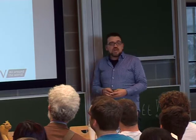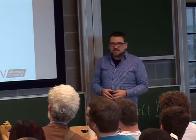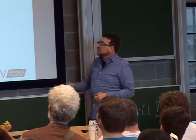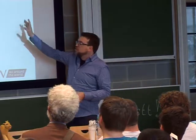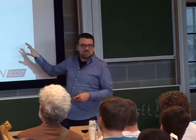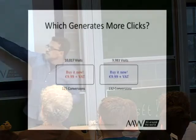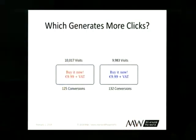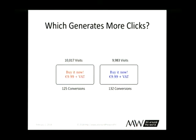Let's try this again. We have roughly 20,000 visitors in our experiment — a little over 10,000 on the red button, a little under 10,000 on the blue. We see 125 conversions on red and 132 conversions on blue. Which one performed better?